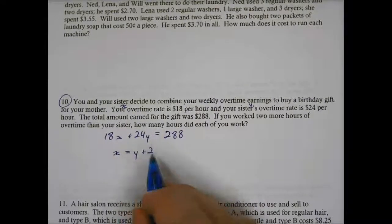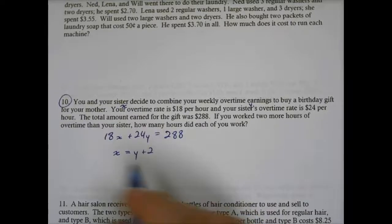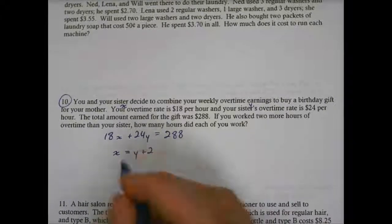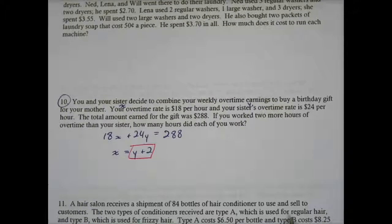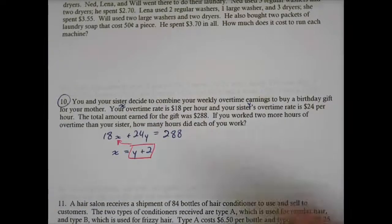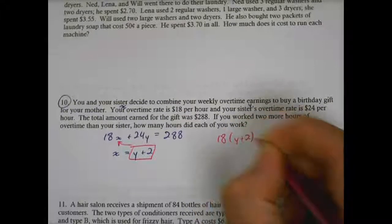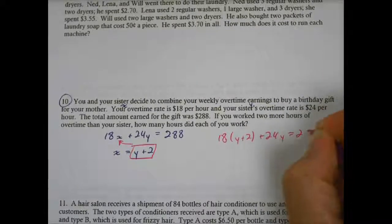So here, we have two equations, two variables. You can solve one like this if you have two equations and two variables. So maybe one of the easiest things to do is just use substitution. Since we already have X by itself, we know X is equal to Y plus 2. So if I substitute that into this function, this will be 18 times Y plus 2 plus 24Y equals 288.